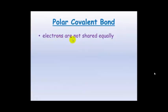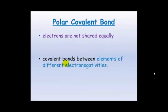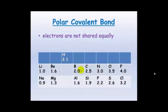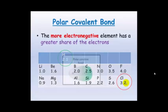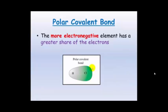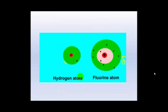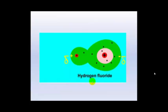Polar covalent bonds, however, are when electrons are not shared equally. This happens with elements of different electronegativities. Whenever two different elements are covalently bonded, the one with higher electronegativity gets a greater share of the electrons. Comparing hydrogen and chlorine, chlorine has higher electronegativity, so it has a greater share. The electron from hydrogen spends more time towards the chlorine side.